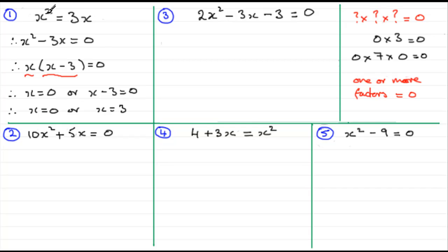You can see it works. If you put zero in, 0² is 0, and 3 times 0 is 0. 0 = 0. And when you put 3 in, you get 3² is 9 equals 3 times 3, which equals 9.